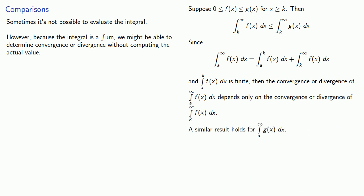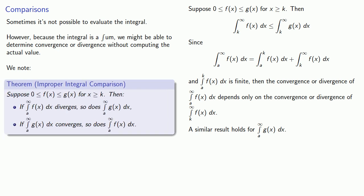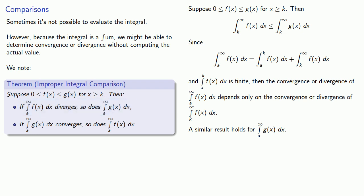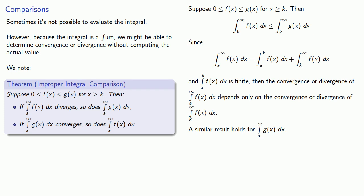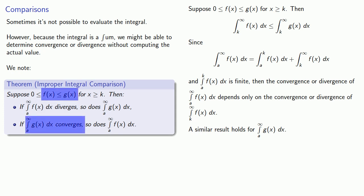A similar result holds for the integral from a to infinity of g(x). What this suggests is the following theorem. Suppose 0 ≤ f(x) ≤ g(x) for x greater than or equal to some value k. Then, if the integral from a to infinity of f(x) diverges, so does the integral from a to infinity of g(x). Likewise, if the integral from a to infinity of g(x) converges, so does the integral from a to infinity of f(x). We could look at it another way: if you're larger than a divergent function, then the integral diverges. If you're smaller than a convergent function, the integral converges.